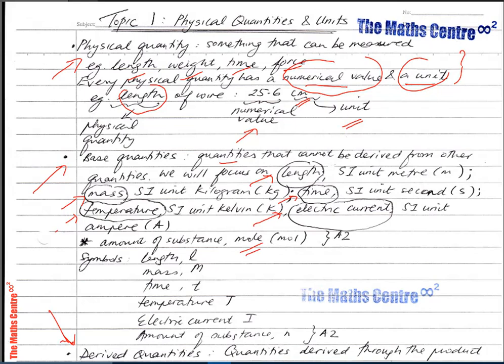For the five base quantities in AS: length has SI unit meter (m); mass has SI unit kilogram (kg); time has SI unit second (s); temperature has SI unit kelvin (K); and electric current has SI unit ampere (A).